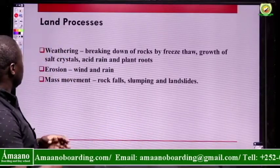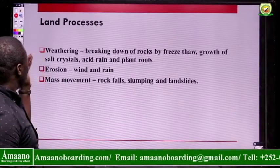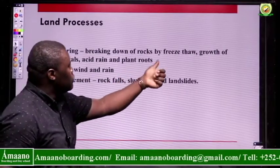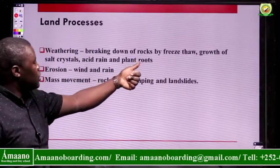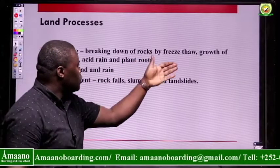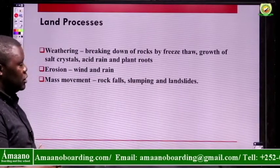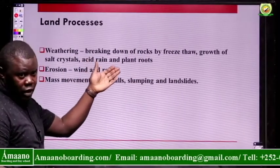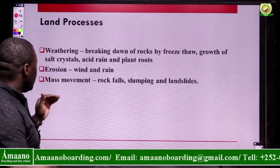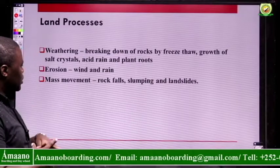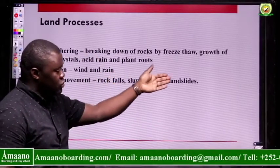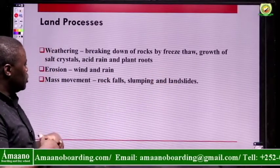Land processes include weathering — the breaking down of rocks through freeze-thaw, which is the expansion and contraction through warming and freezing, growth of salt crystals, acid rain, and plant roots. Erosion on land is through wind and rain. Mass movement happens through rock falls when there's a weakness, slumping, and landslides, which is a mass of land moving.